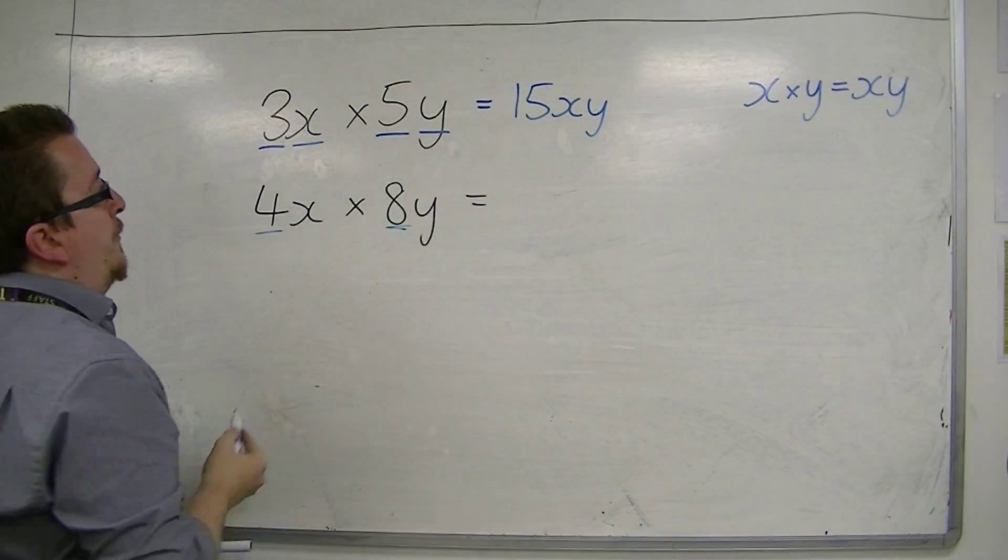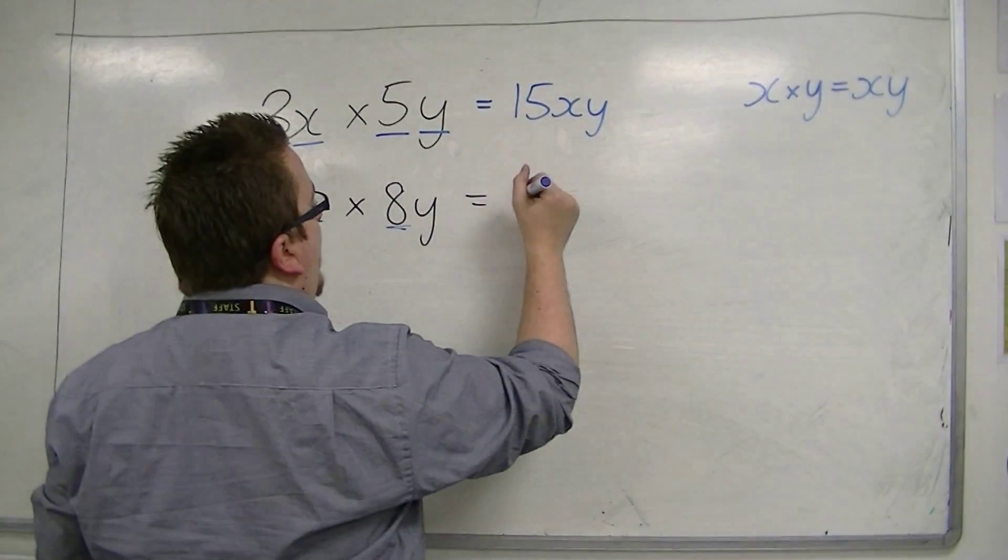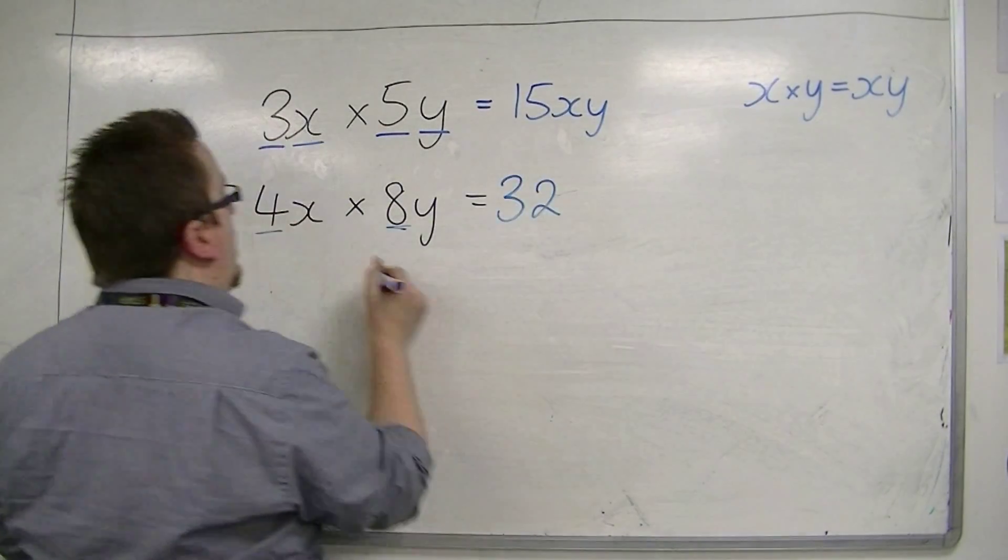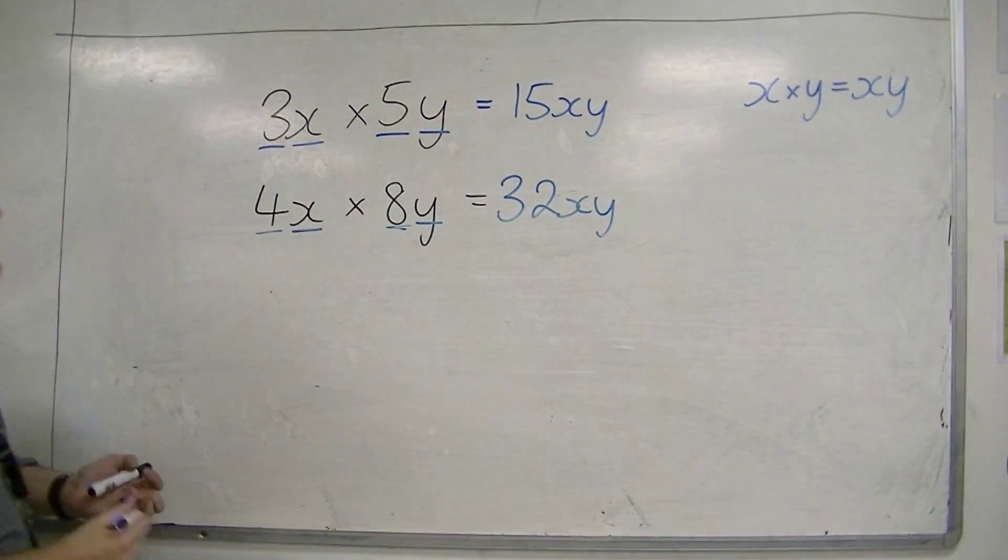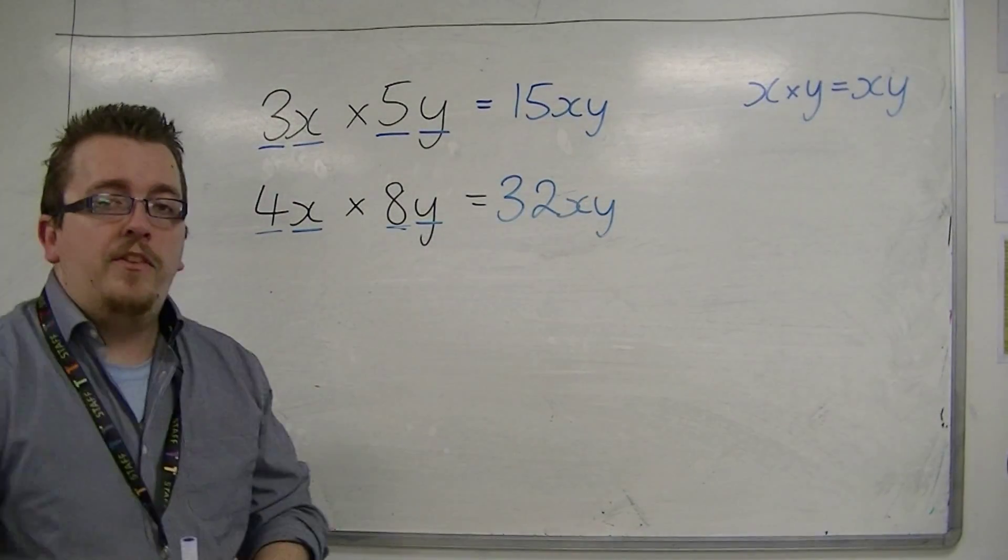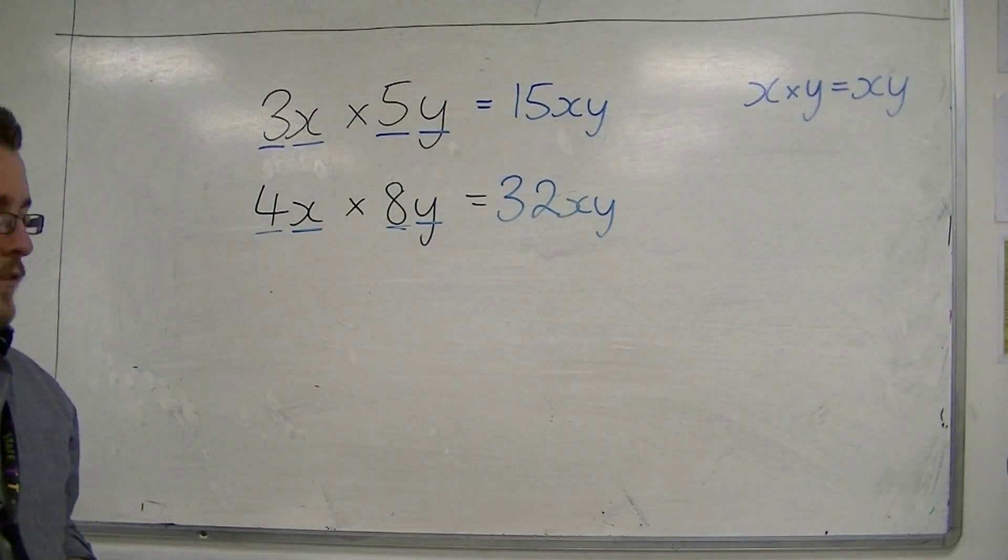So deal with the numbers first. 4 and 8. 4 times 8 is 32. And then we've got x and y. So x times y. So there's not really much difficulty here so far.